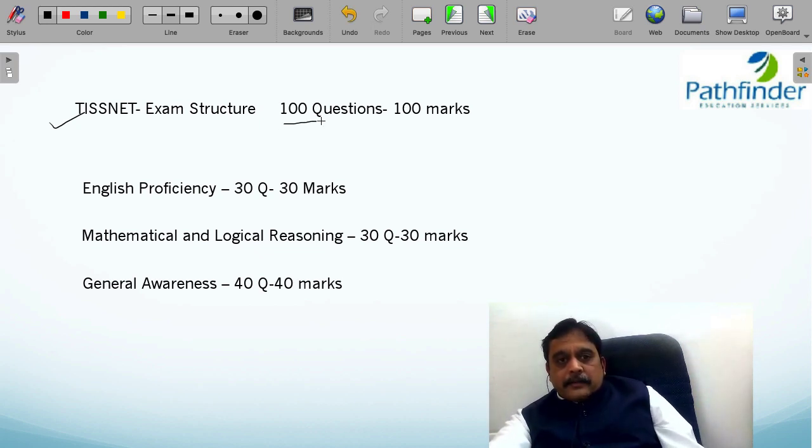As I told you, there are 100 questions worth 100 marks. There is no negative marking in this examination. What does it mean for you? If there is no negative marking, it implies you have to attempt each and every question. The three sections are: English proficiency with 30 questions worth 30 marks, mathematical and logical reasoning with 30 questions and 30 marks, and general awareness with 40 questions and 40 marks. There is no sectional time limit. So this is the basic composition of the TISNET exam.